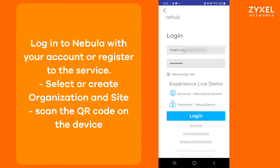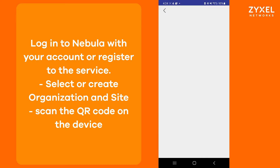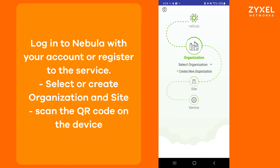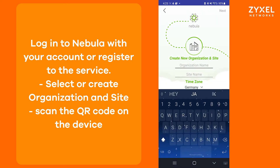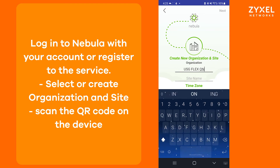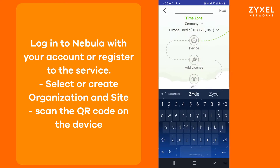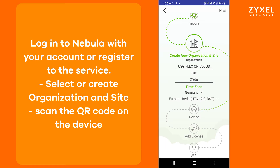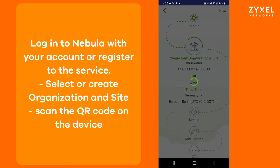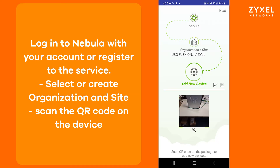Step 2. Login to the Nebula portal using an existing account or create a new account. Then you have to enter the organization and the site name you want to use to register your USG Flex device. When you have completed all data, you have to scan the QR code on the bottom of the device to register it to your Nebula account.